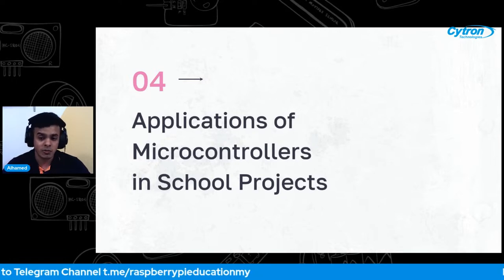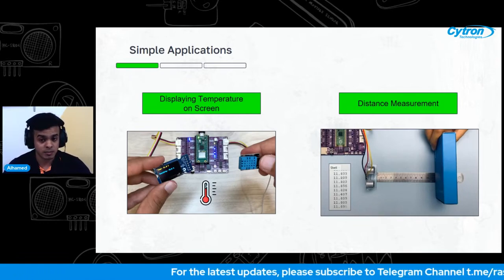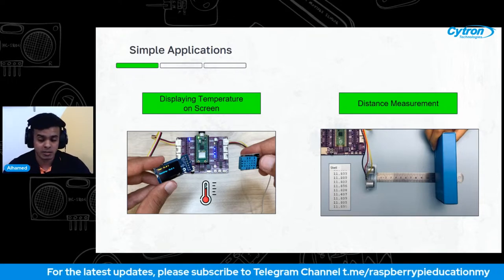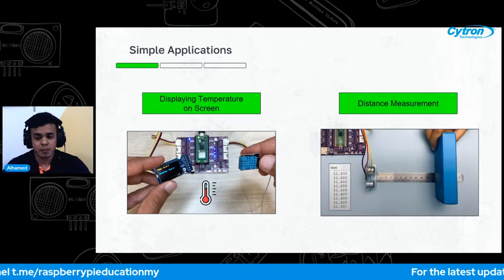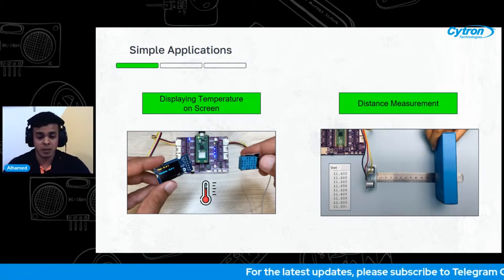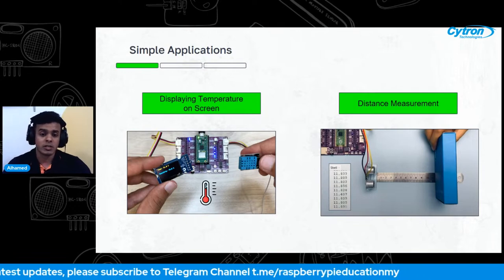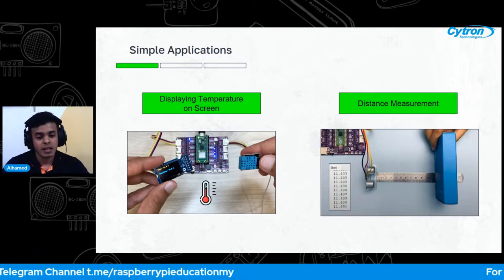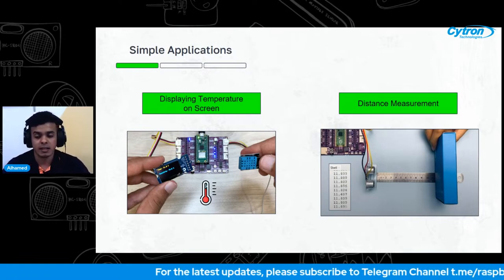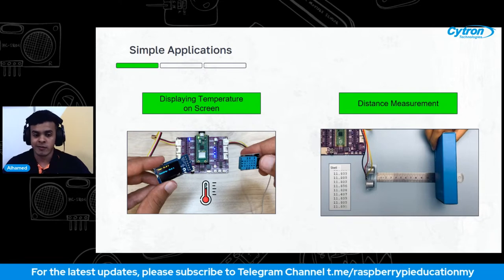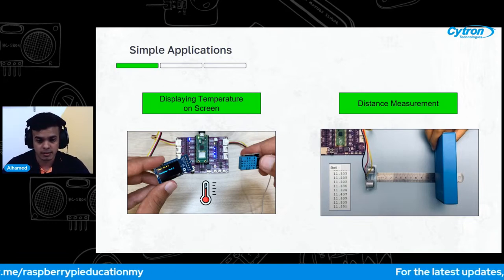Now that we've learned about the Raspberry Pi Pico and the Maker Onu, let's explore some projects that might inspire you. For easy examples: first, displaying temperature on a screen — with a Maker Pi Pico, you can create a project that measures temperature using sensors and displays it on a screen, helpful for monitoring your surroundings. Second, distance measurement — using an ultrasonic sensor and the Maker Pi Pico, you can build a device that measures distance, useful for projects like a parking sensor.